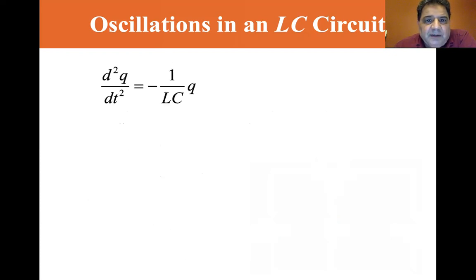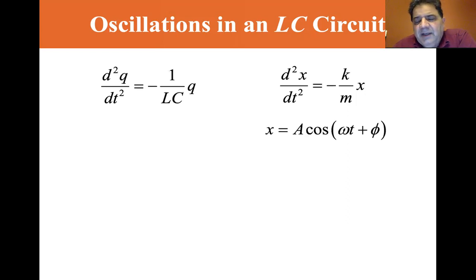Now, if we look at the equation d squared q dt squared equals minus 1/LC q, which we just derived, it's very similar to a simple harmonic motion equation, where k is the spring constant, m is the mass, and x is the distance. From that we get a sinusoidal equation, x equals A cosine omega t plus a phase angle phi, where A is the max extension of our spring.